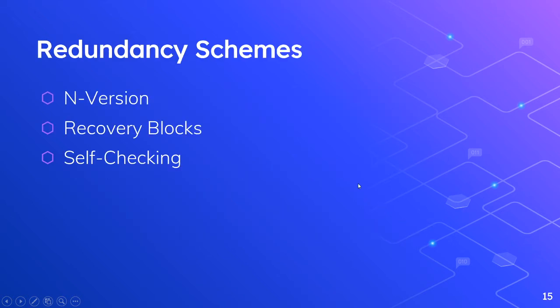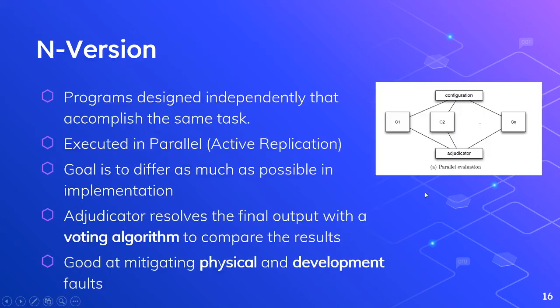Here are some typical redundancy schemes for adjudicators: the N-version scheme, a recovery block scheme, and a self-checking scheme — although the self-checking scheme is really for more mature projects with a much greater understanding of optimal situations. We're going to focus on the first two, and you may want to explore the third as you progress in your understanding of fault-tolerant services. The N-version scheme involves programs designed independently that accomplish the same task — C1, C2 through CN — executed in parallel, which is active replication.